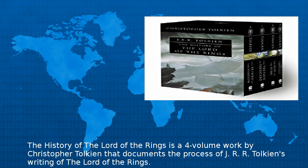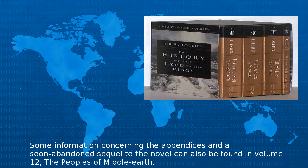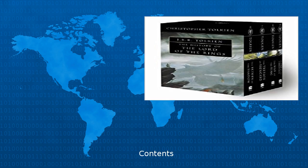The History of the Lord of the Rings is a four-volume work by Christopher Tolkien that documents the process of J.R.R. Tolkien's writing of The Lord of the Rings. The history is also numbered as volumes 6 to 9 of The History of Middle-earth. Some information concerning the appendices and a soon-abandoned sequel to the novel can also be found in volume 12, The Peoples of Middle-earth.